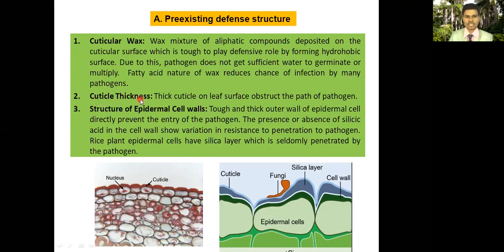The next pre-existing structure is cuticle thickness. The cuticle present on the leaf surface obstructs or disturbs the path of the pathogen and disrupts the life cycle of the pathogen.